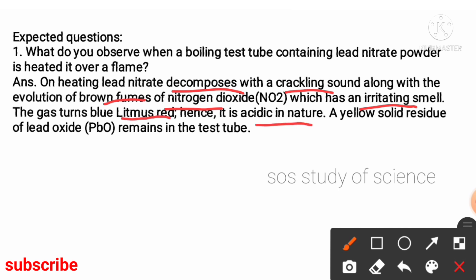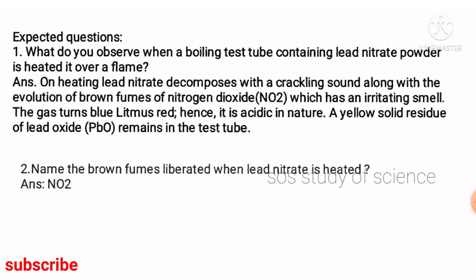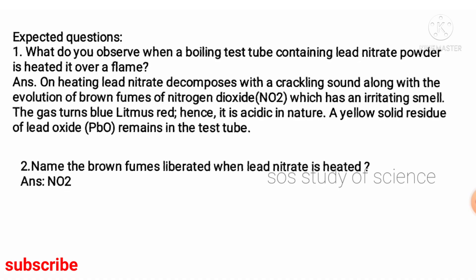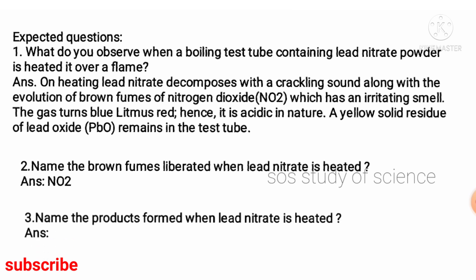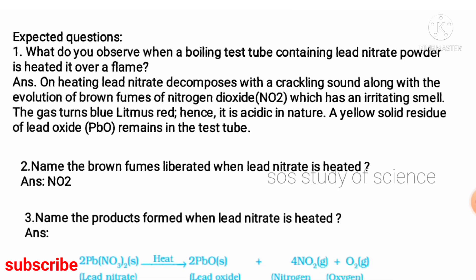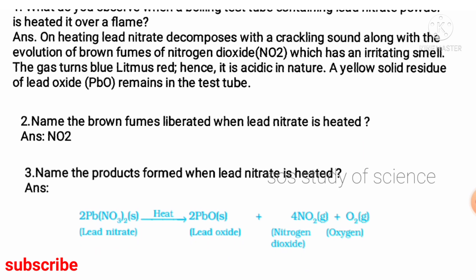The next expected exam question is: name the brown fumes liberated when lead nitrate is heated — the answer is nitrogen dioxide. Another question: name the products formed when lead nitrate is heated — the answer is lead oxide, nitrogen dioxide, and oxygen. These are the most important and expected questions based on Activity 1.6.